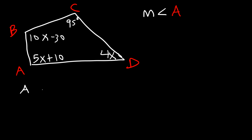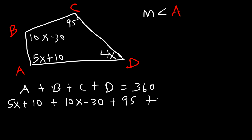So we know that all four angles A plus B plus C plus D has to add up to 360. Angle A is 5x plus 10. Angle B is 10x minus 30. Angle C is 95. Angle D is 4x. All of that has to add up to 360. So what we need to do is combine like terms. 5x plus 10x is 15x. 15x plus 4x that's 19x. Negative 30 plus 95 or 95 minus 30 that's 65. 65 plus 10 is 75. So 19x plus 75 is equal to 360.